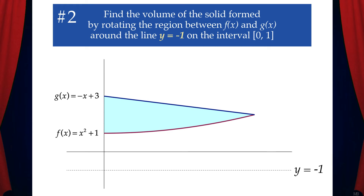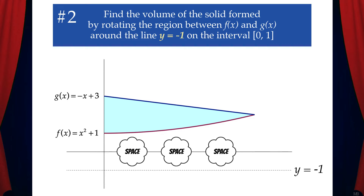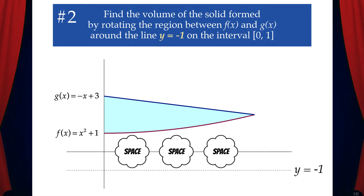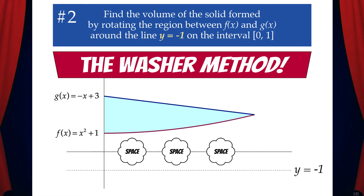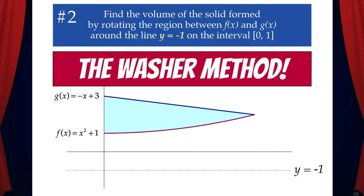Example 2: Find the volume of the solid formed by rotating the region between f of x and g of x around the line y equals negative 1 on the interval [0, 1]. Just like the last example, we have space between the axis of rotation and the region, so we'll use the washer method.